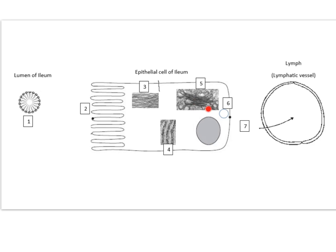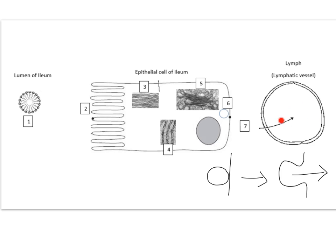The Golgi apparatus modifies the proteins and triglycerides and packages them into a structure called a chylomicron, represented by number six. The chylomicron is a large structure made from those triglycerides that need to be absorbed into the lymphatic system. These structures are too large to simply diffuse into the lymphatic vessel, so they move by exocytosis, whereby the chylomicron fuses with the cell surface membrane and releases its contents into the lymphatic vessel.